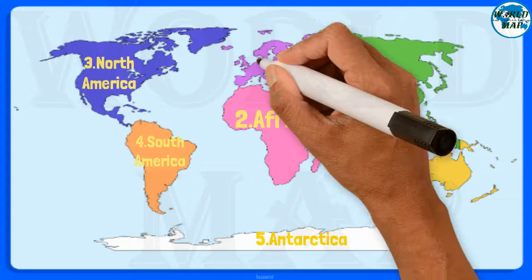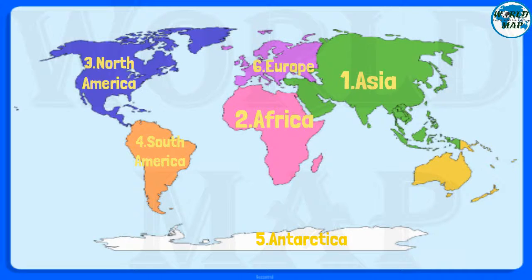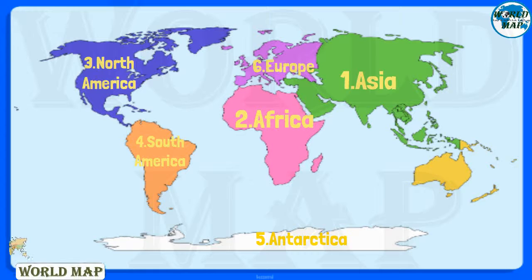Number 6: Europe. It is the sixth largest continent in the world and the third most populous. Europe and Asia are sometimes called Eurasia as they are physically connected, but are considered separate continents due to linguistic and cultural differences. Europe comprises 48 countries.